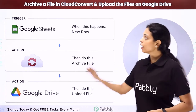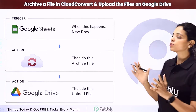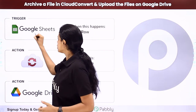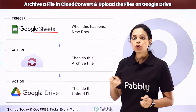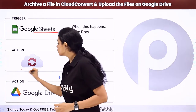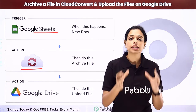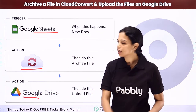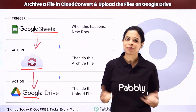In this video, we are going to see how to archive a file in Cloud Convert and upload the files on Google Drive. Let's say that you are using Google Sheets as a spreadsheet where you have the URLs of all the new files. First, you want to archive these files on Cloud Convert, which is an online file converter, and then upload them on Google Drive. To do this, you will have to integrate these three applications, which can be done using Pabbly Connect software.